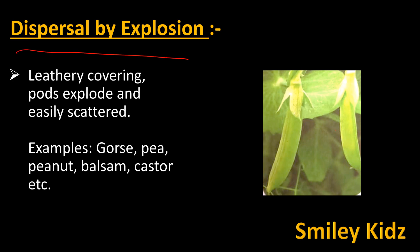Dispersal by explosion. The seeds which are dispersed by explosion have a leathery covering, and their pods explode and are easily scattered. Examples are gorse, pea, peanut, balsam, castor, etc.